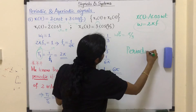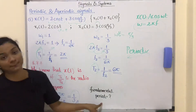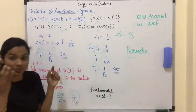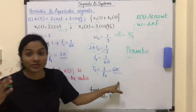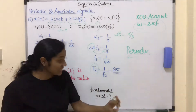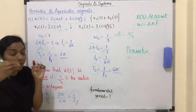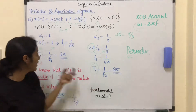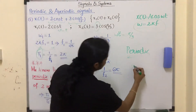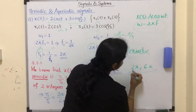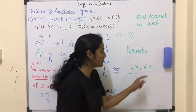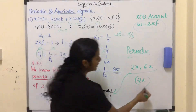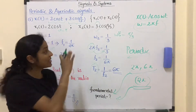Since the signal is periodic, we now find the fundamental period. We have T1 = 2π and T2 = 6π — both are different values, so we calculate the least common multiple. For a signal x(t) that is a combination of x1(t) and x2(t), the fundamental time period is the LCM of T1 and T2. The LCM of 2π and 6π is 6π, since 2π is a common factor of both values. So the fundamental time period is 6π.